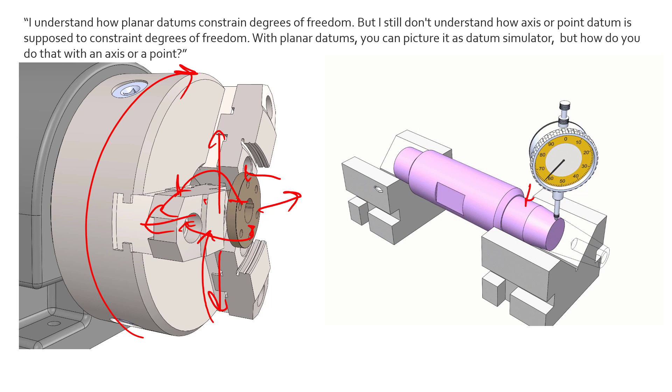Same thing here for the V-blocks. We can see that we've stopped translation—we cannot disengage from the V-block. We've stopped translation that way, we've stopped translation this way. We've also stopped rotation this way as well as this way. But what we haven't done is stopped translation in and out of the axis of rotation or the rotation about that axis. Again, we see our datum axis is controlling four degrees of freedom: two translations and two rotations.